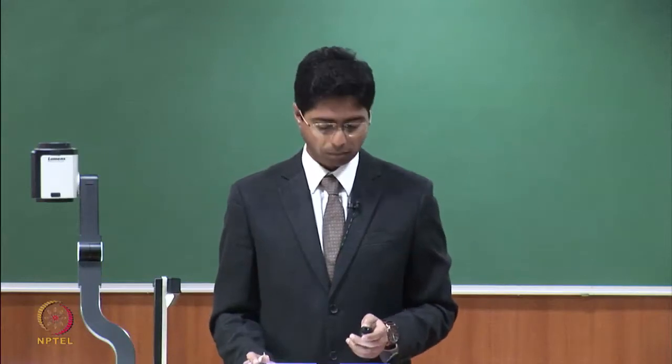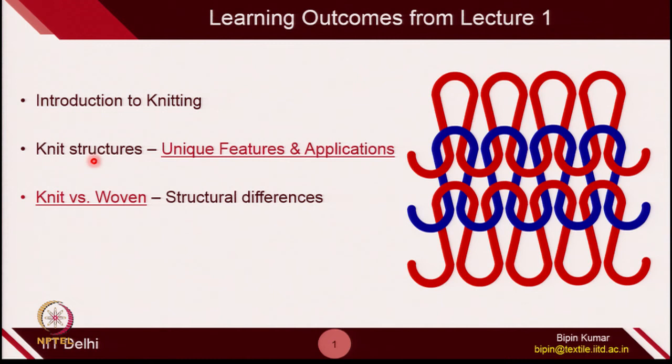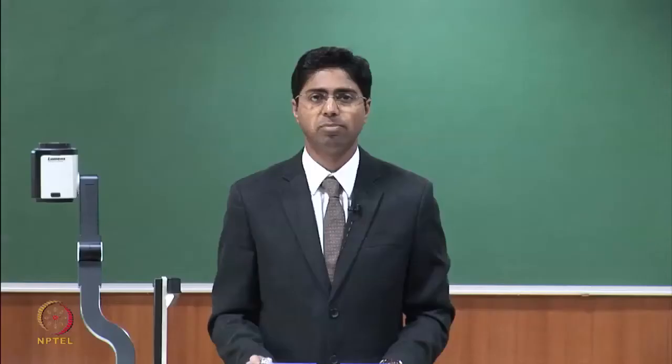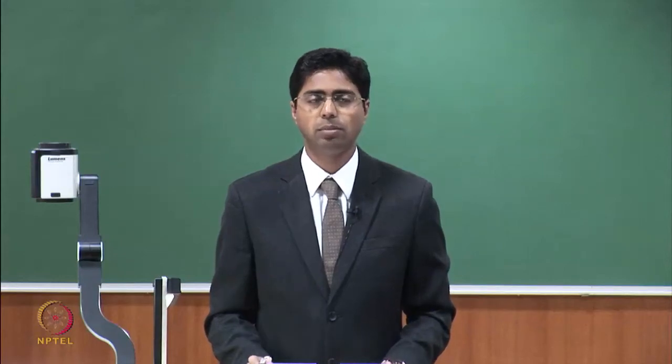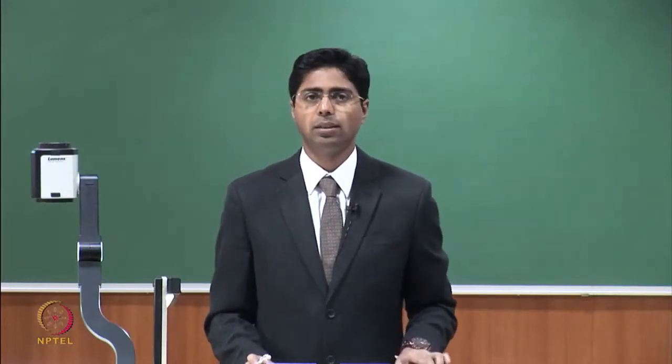So let's go to this course. In this particular lecture, we are going to cover some basic topics on knitting. First of all, we would like to know what do you mean by knitting. To understand knitting, we need to also understand the structure of knitting. We will discuss some of the unique features and applications of knit structures. At the end, we are going to compare knit versus woven structures, which is the most fundamental thing. Because once you understand these structures, you would be able to appreciate knitting, which is so important nowadays to design any sort of products — not only garments, but also technical products related to different applications.